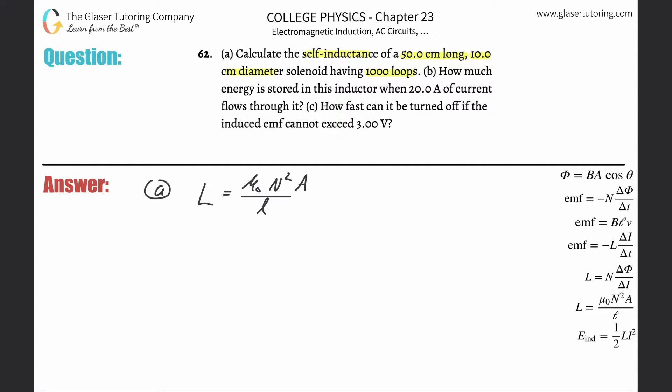Anytime you have a changing current, you'll have a changing inductance in the case of a loop. Here inside of the solenoid itself, even without anything changing, there is also an inductance. Interestingly enough, so this is going to be 4π times 10 to the minus 7 times the number of turns, which is 1000 squared, times the area.